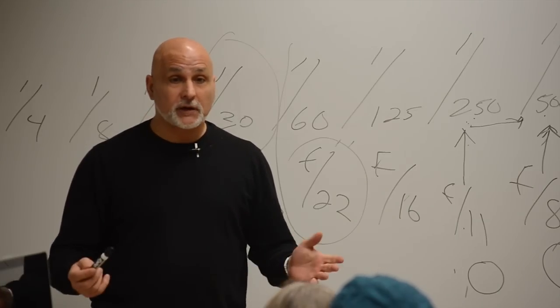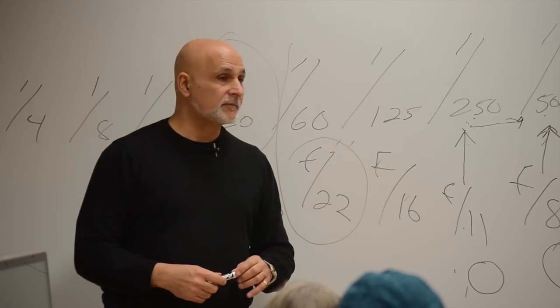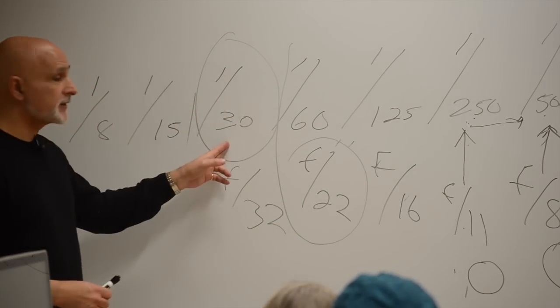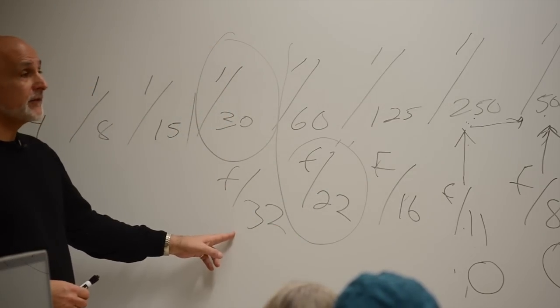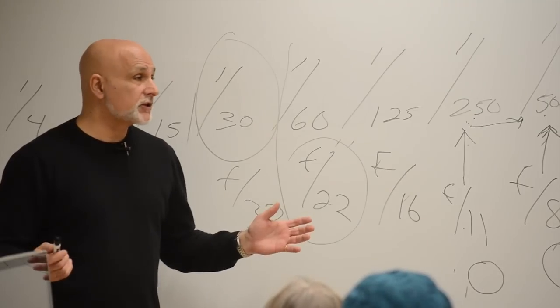But sometimes quality loss is better than no photo. You can't do this? Go home. Because if you knew you needed a 30th of a second at f/32 and you don't have f/32 and you're not prepared to lose a little quality, go home. Because you're not going to get the shot.